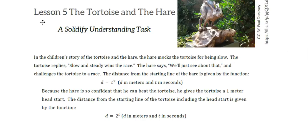In the children's story of the tortoise and the hare, the hare mocks the tortoise for being slow. The tortoise replies, slow and steady wins the race. The hare says, we'll see about that, and challenges the tortoise to a race. The distance from the starting line of the hare is given by the function d equals t squared, where d is in meters and t is in seconds.